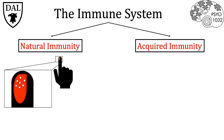So when antigens enter, antibodies will bind them, and this will cue your immune system cells to come and destroy these antigens and prevent them from entering the bloodstream and infecting your body.